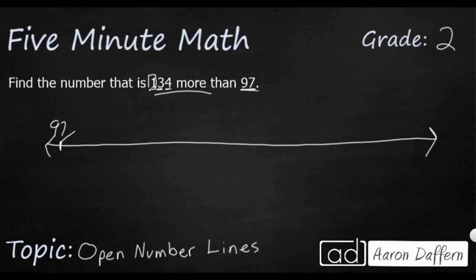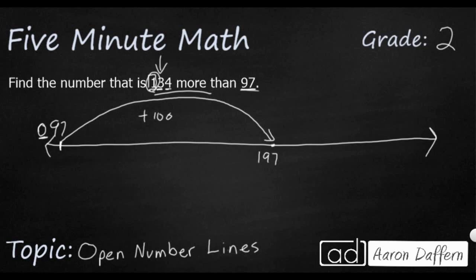I'm going to take a big jump forward — that's going to be 100 more. I'm going to add 100. So I take the 100s digit, which in this case is 0, and I simply add 1. So instead of 97, I'm going to have 197. Now I'm going to take my 10s digit, which is 3, meaning I'm going to take 3 hops of 10 — 1, 2, and 3. I'll put little dots here to mark them, each one is plus 10.